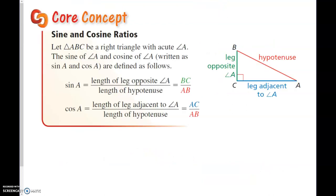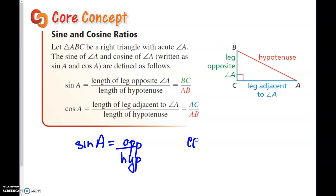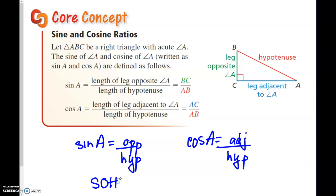The other two concepts we talked about were sine and cosine. The sine of an angle is opposite over hypotenuse, and the cosine of an angle is adjacent over hypotenuse. We called this SOH-CAH — that was our short acronym.